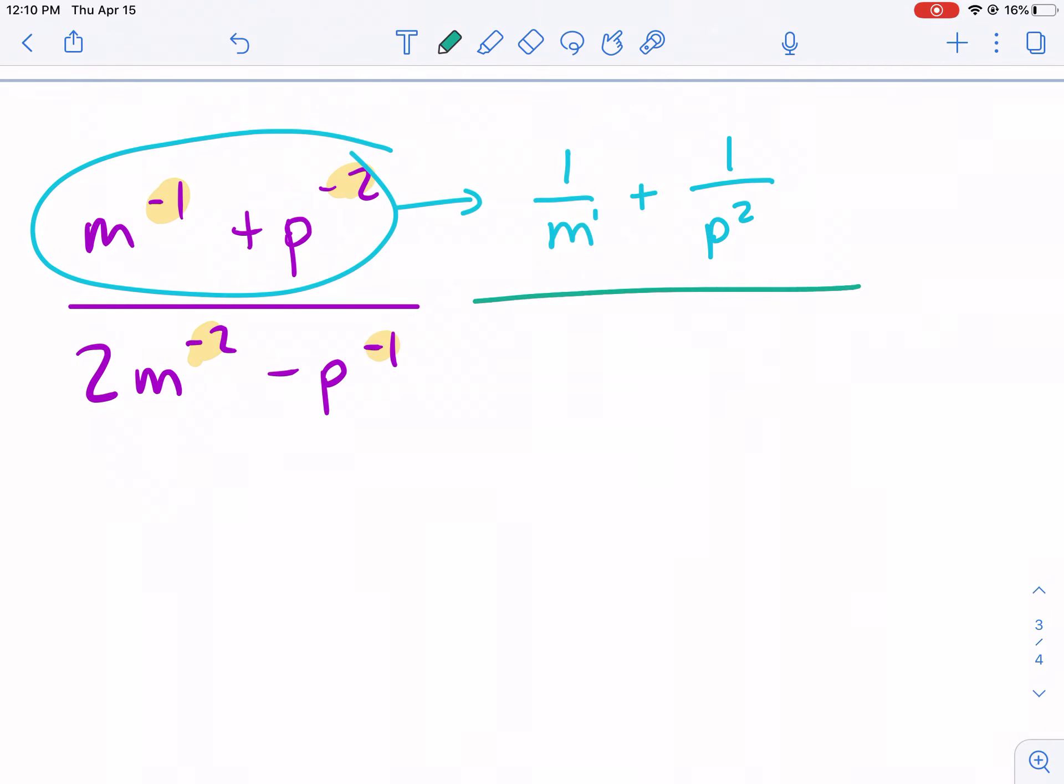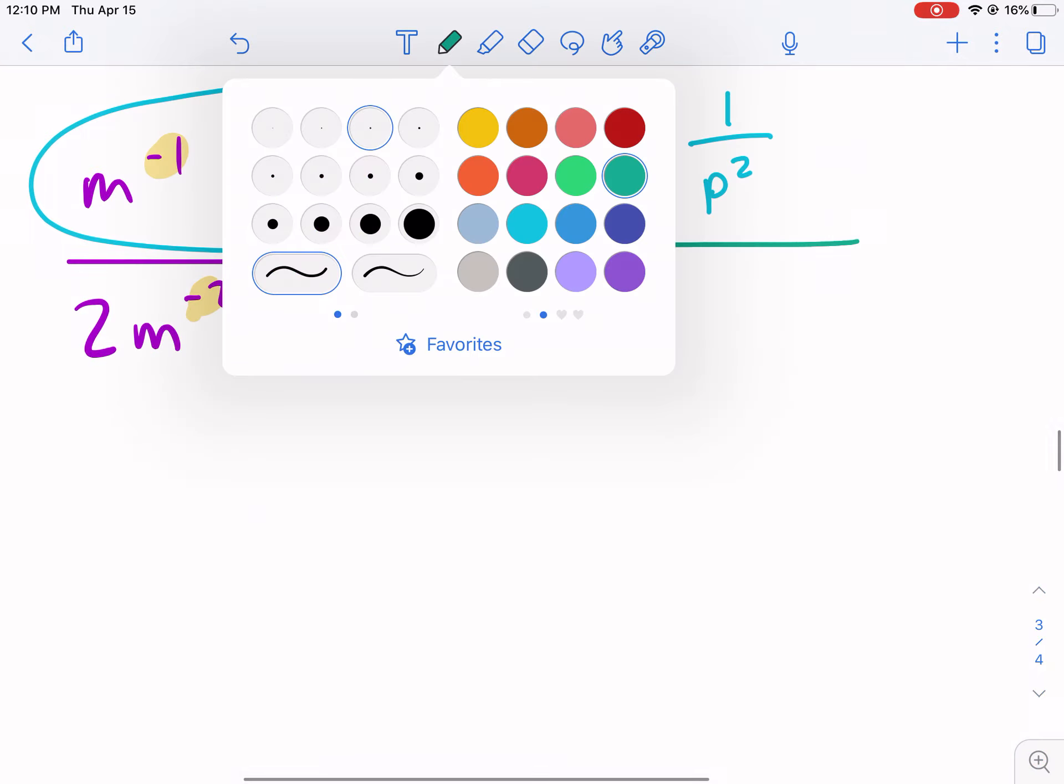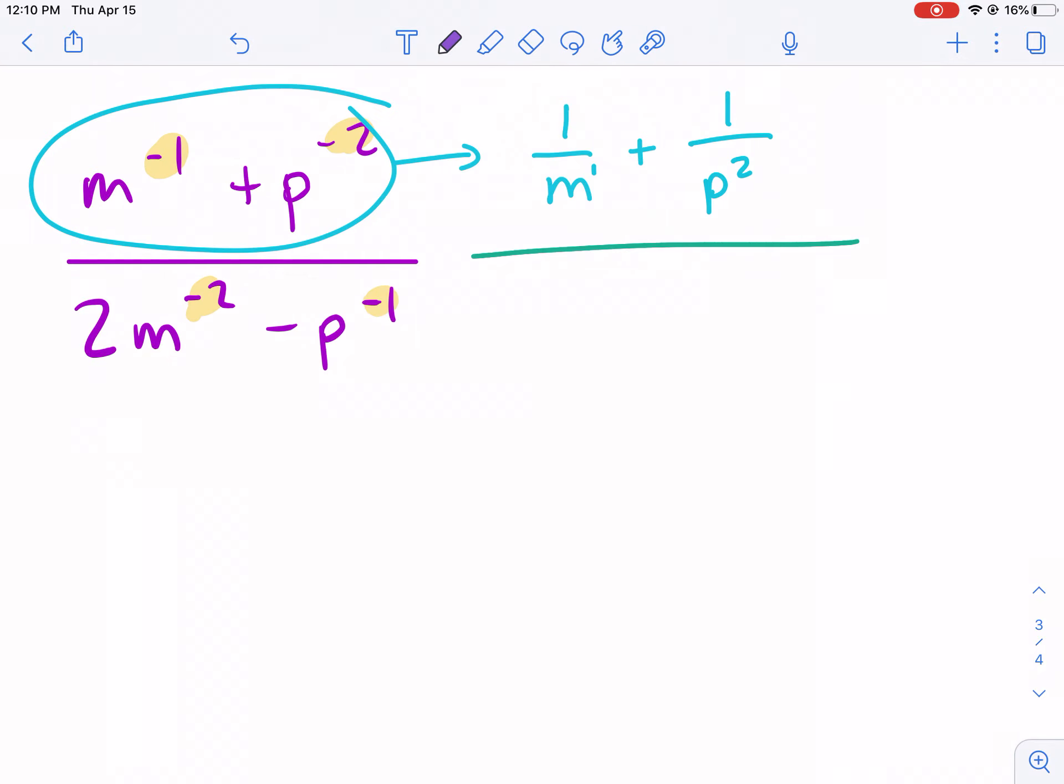This is going to be our change, our divide sign. And then this is the bottom, the denominator. We're going to have 2. Now, the 2 is not affected by the m to the negative second. So we're going to put m squared in the bottom here minus 1 over p.